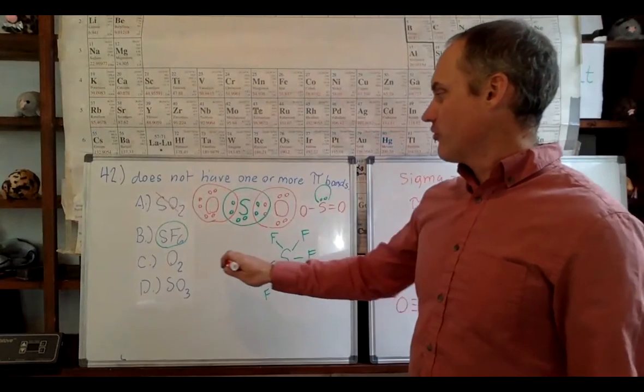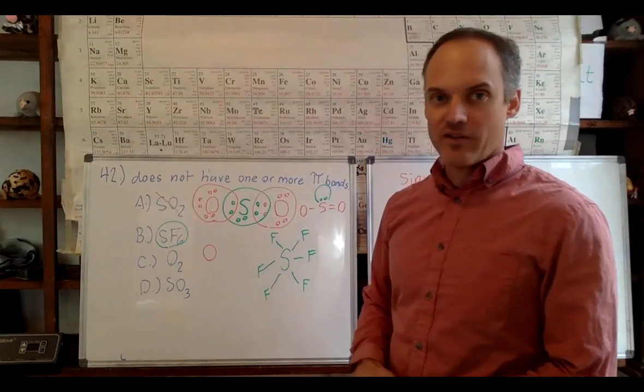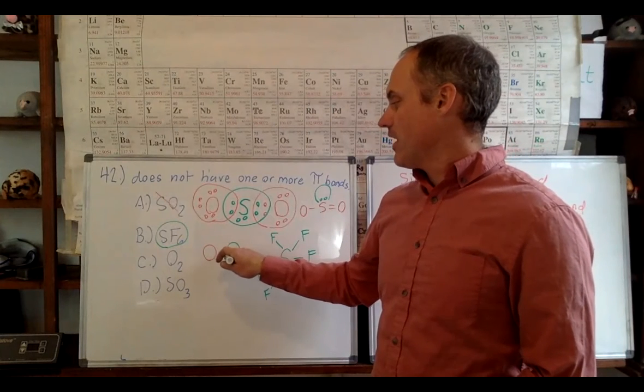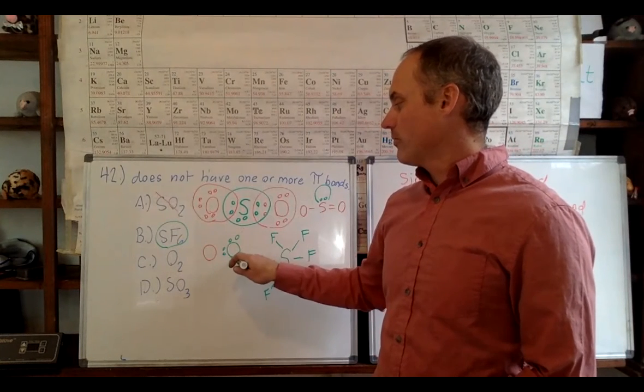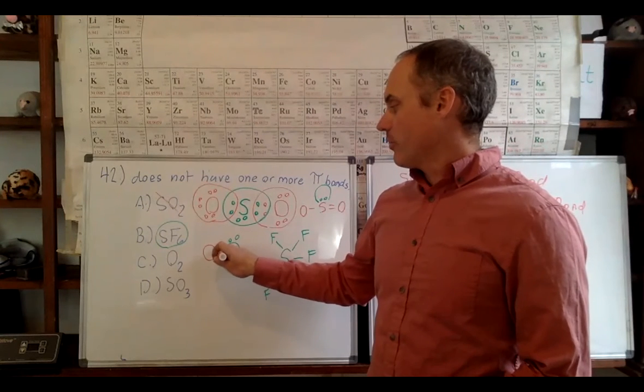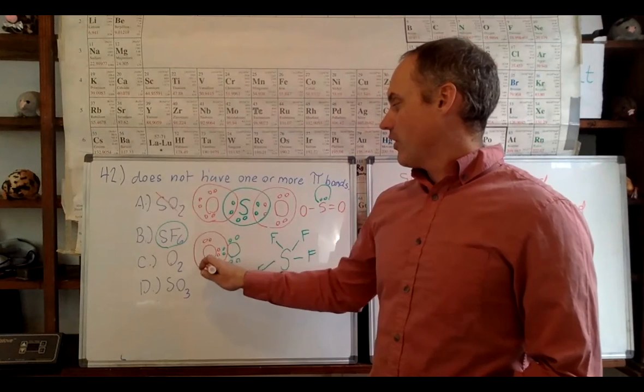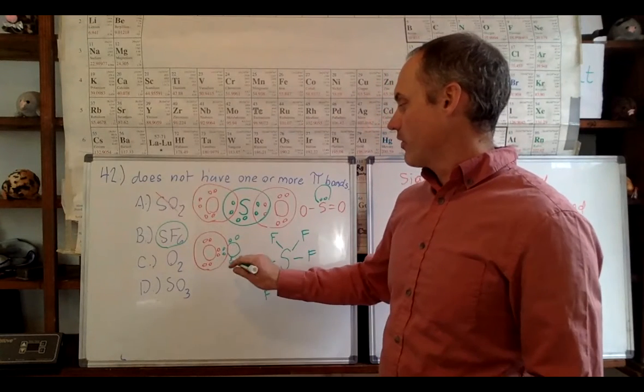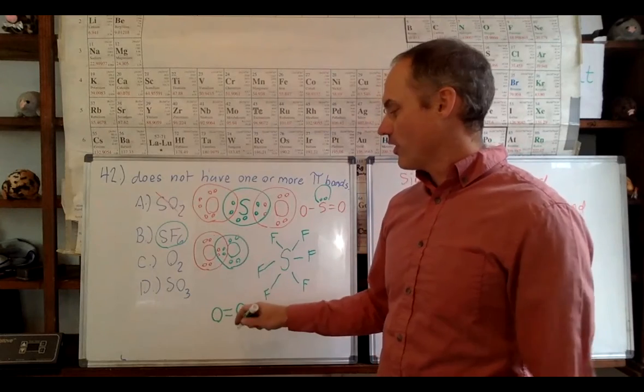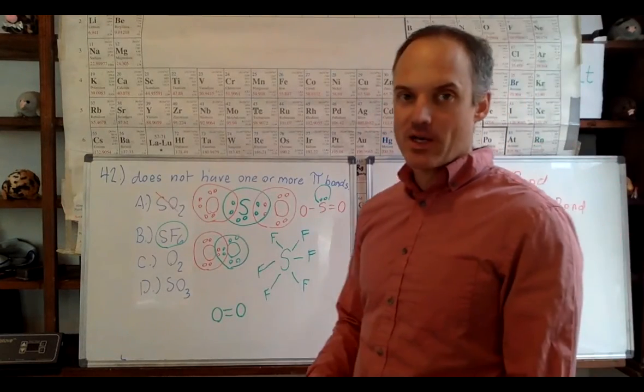So oxygen, like I mentioned before, likes to form double bonds because it has six electrons and it wants to have eight. Everybody wants to have eight except for boron and some other metals, well all the metals pretty much. So in this case in O2 we do have a double bond occurring here between our oxygens. So it'll look like that, so we have a sigma and a pi, okay? So no go there.